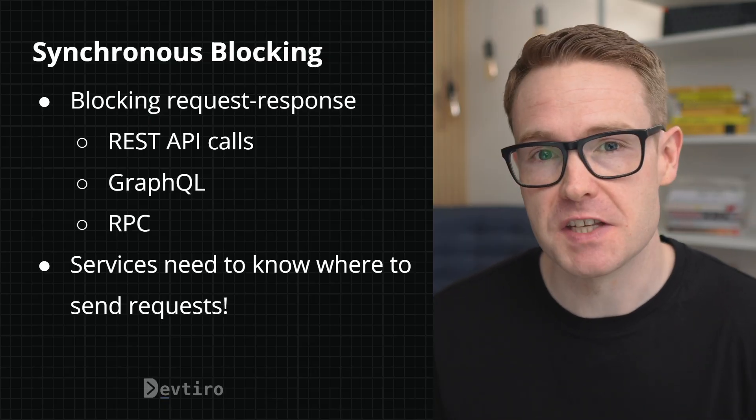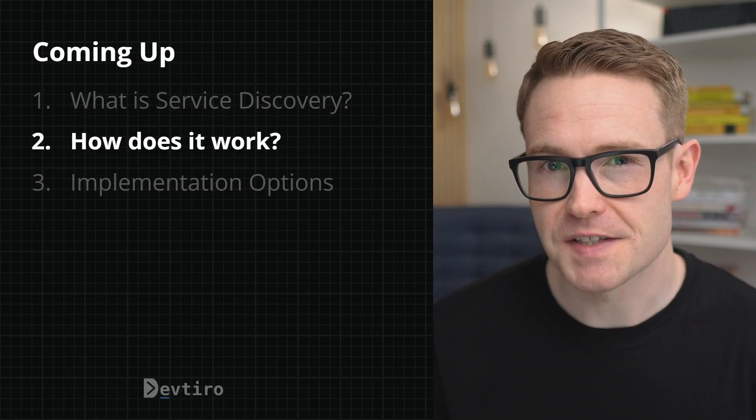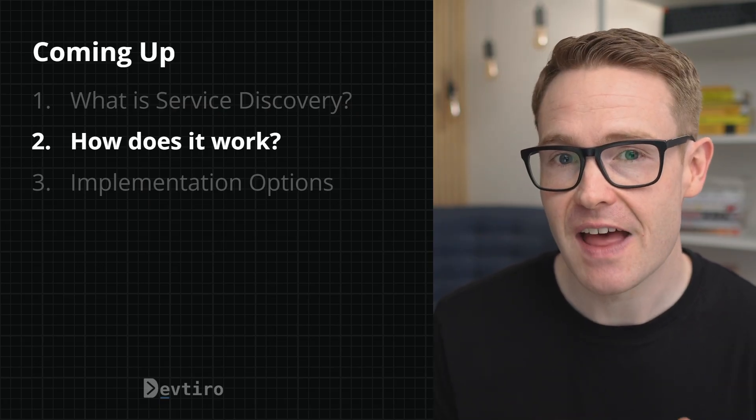If service A needs to send a request to service B, it needs to know where to find service B. A simple approach like hard-coding addresses may work well in development, but as the number of microservices increases and as we horizontally scale each microservice, the challenge becomes a lot greater. After all, it's typical for a microservice's network address to be assigned dynamically — so you couldn't possibly hard-code for that. And that's where service discovery comes in.